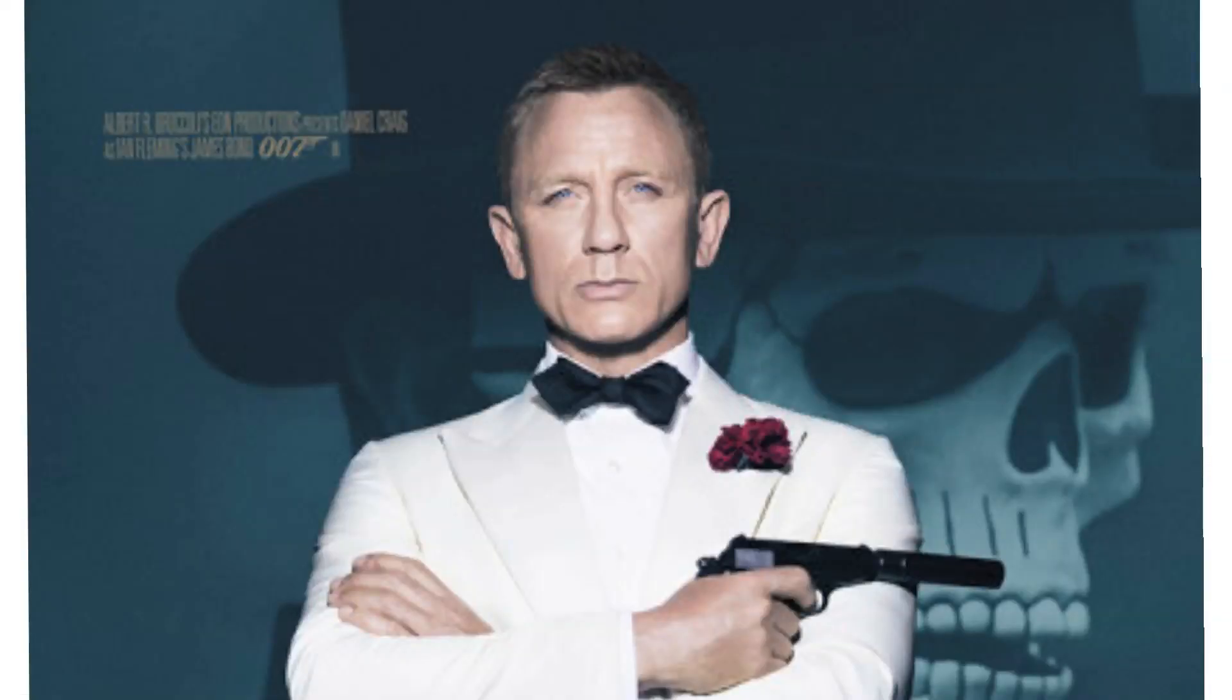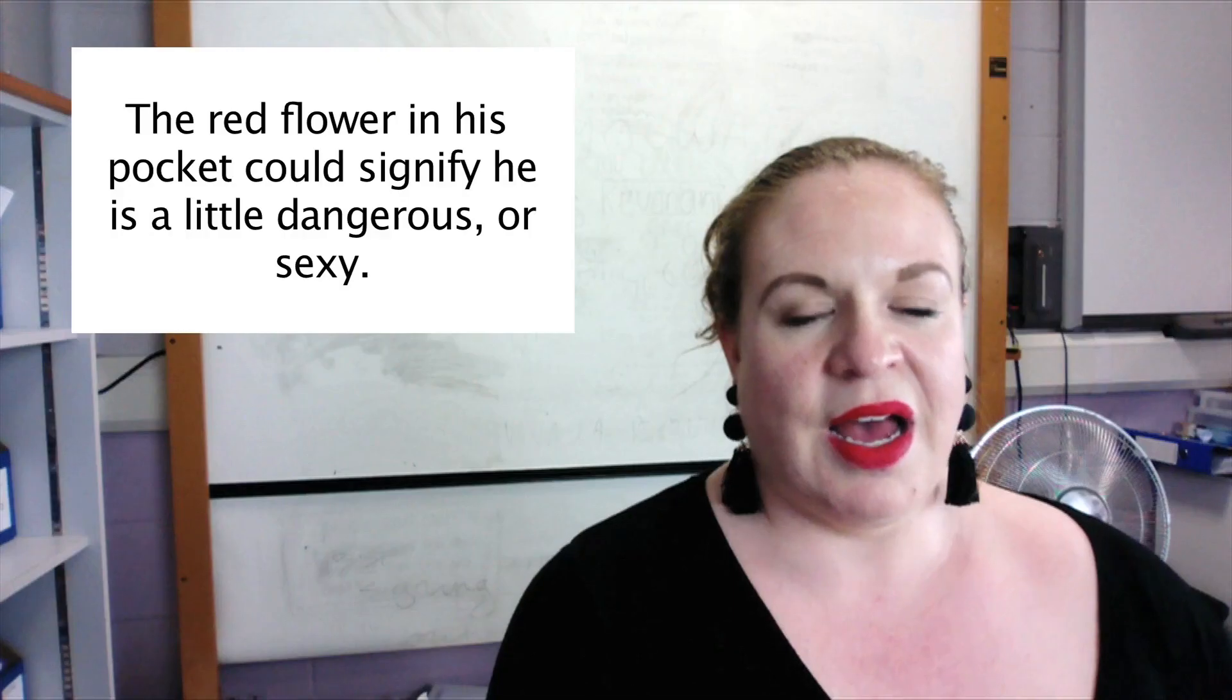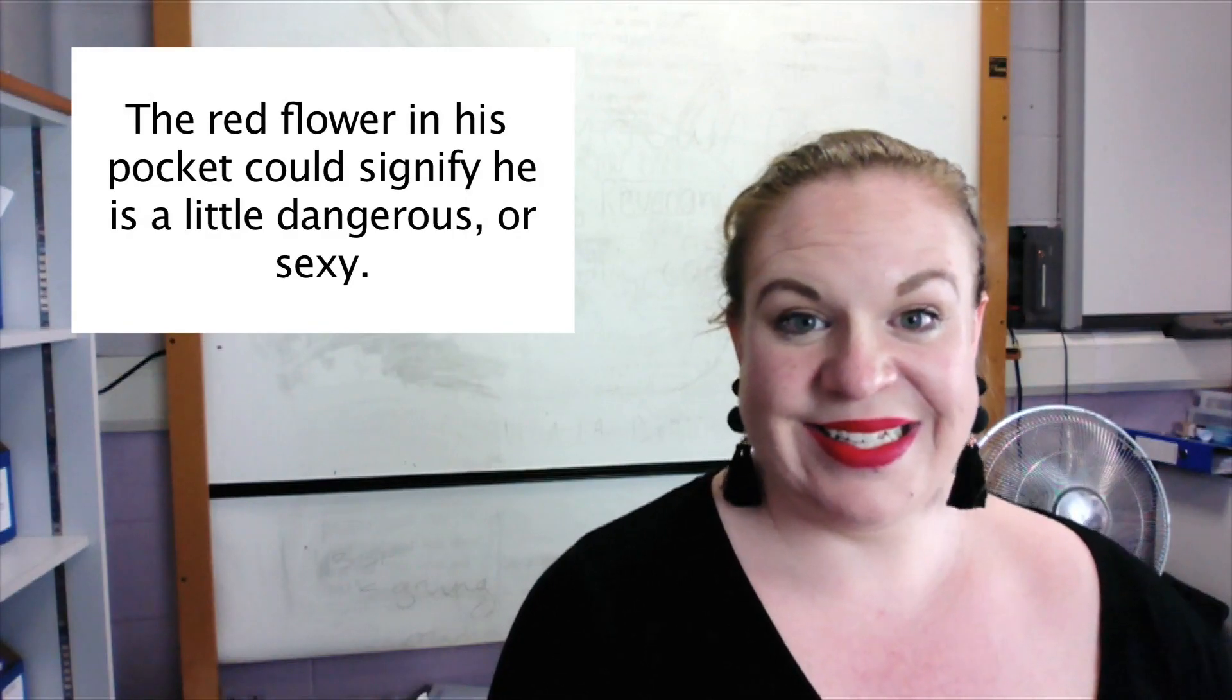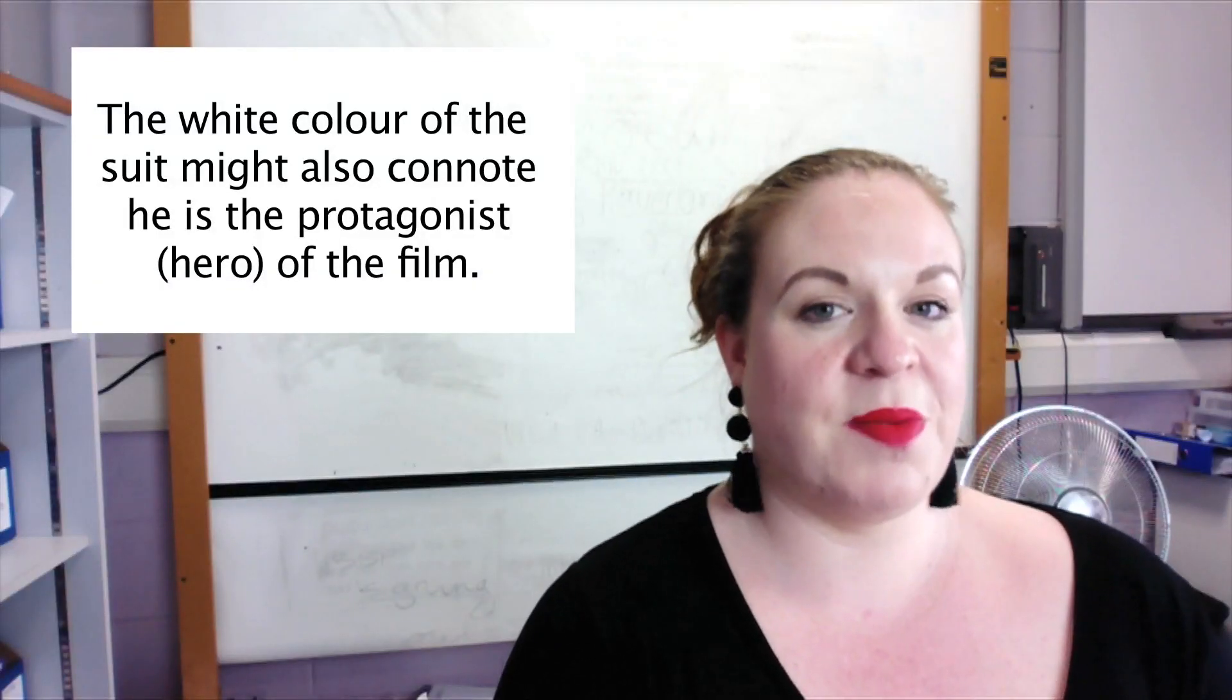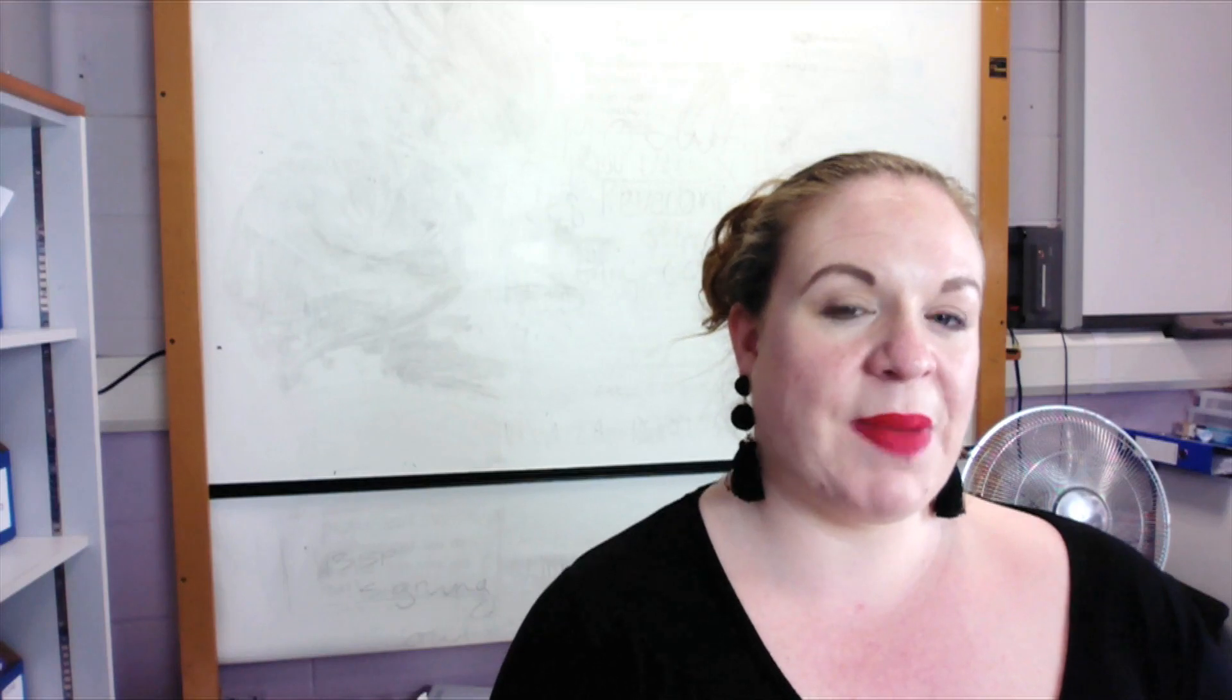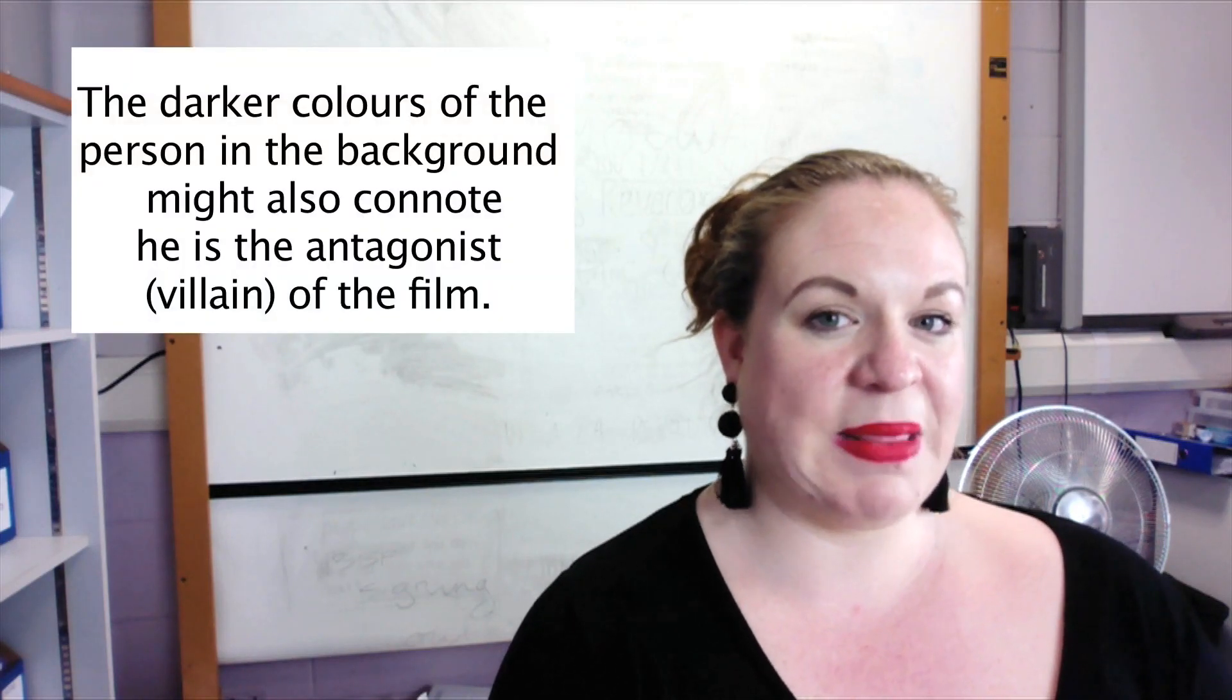The red flower in his pocket might be there to signify that he's a little bit dangerous, a little bit violent or even a little bit sexy. The white colour of Bond's suit also connotes that he is highly likely to be the hero or the good guy, the protagonist of the film, whereas the darker colours of the character in the background suggest that they are likely to be the villain or antagonist.